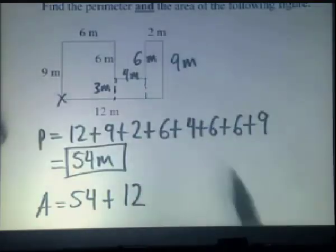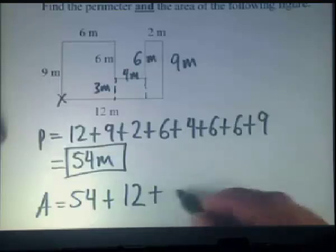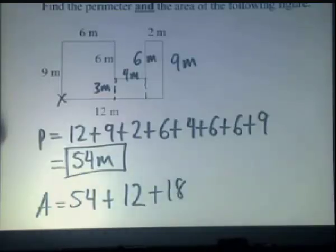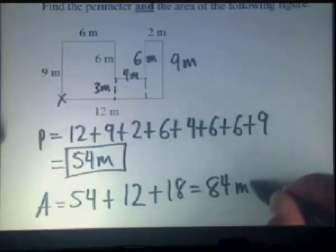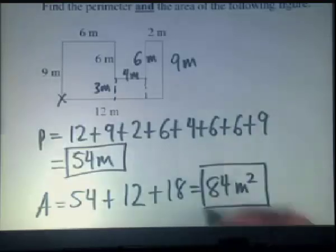Then this skinny little rectangle down the side here, which is 2 by 9 or 18. Now when we add those values up, we should come up with a value of 84 square meters. And this completes our problem.